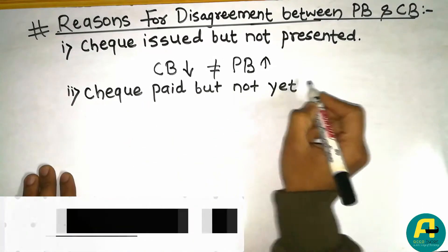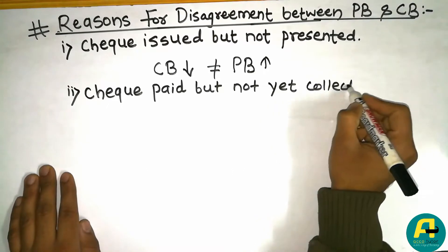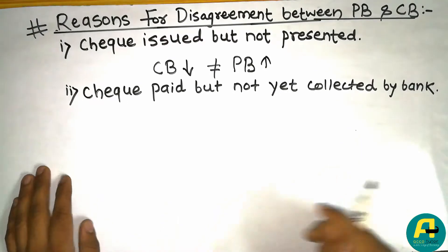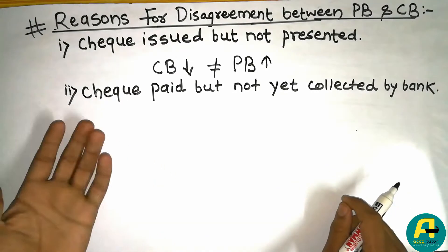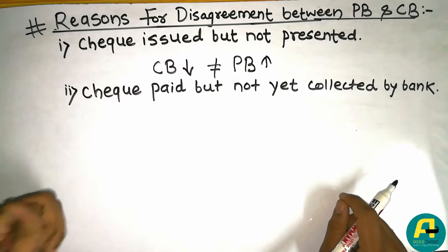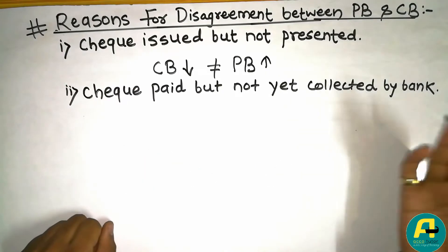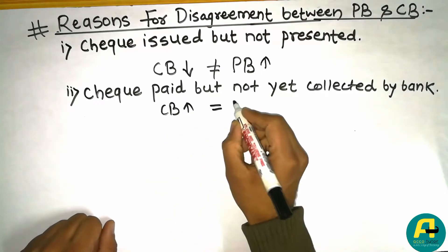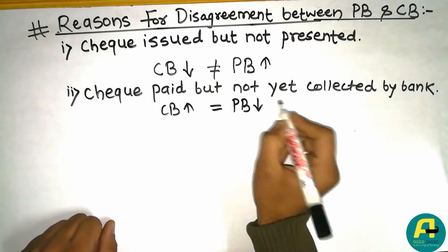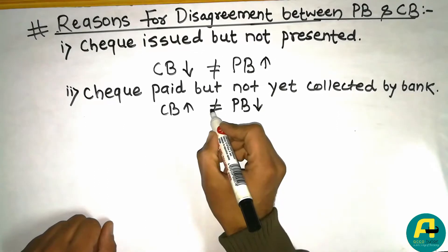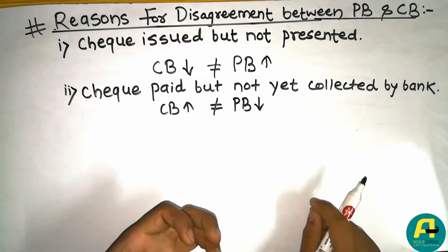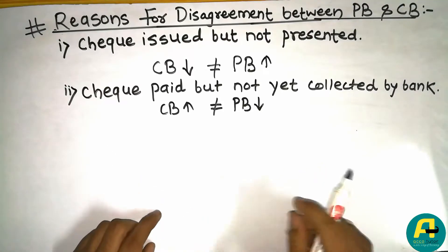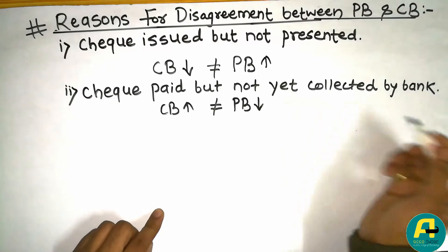The second reason is: check paid but not collected by bank. A check is already received, which means the balance of the cash book is increased, but the balance of the pass book is decreased. This creates an unequal balance between the two.